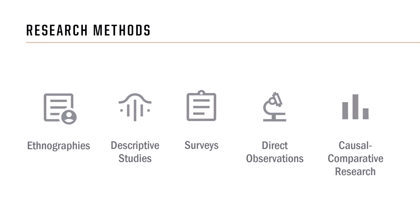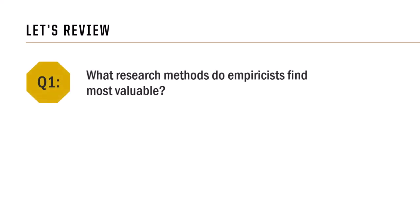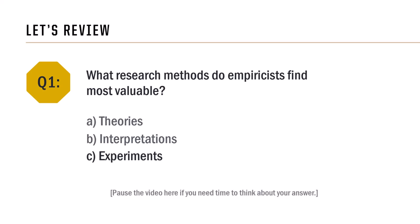Before we talk about finding research, let's take a moment to review some key points. Question 1: What research methods do empiricists find most valuable? A. Theories, B. Interpretations, or C. Experiments. If you answered C, you are correct. Empiricists most frequently conduct scientific experiments to gather data.